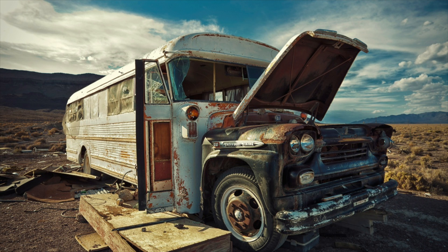Two things to keep in mind. The theorem says we need no more than n over 3 guards. In many cases, fewer guards are sufficient. An extreme example is a convex polygon with n sides. It only requires one guard.